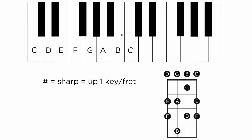The opposite of a sharp is called a flat, and it's signified by this little lowercase B sign, and all that means is go down one key or one fret.